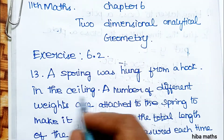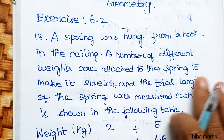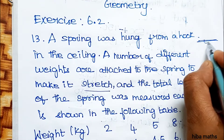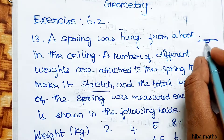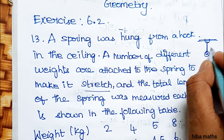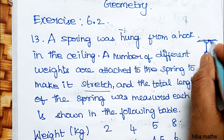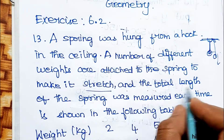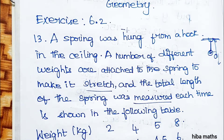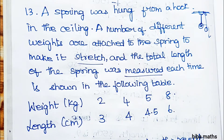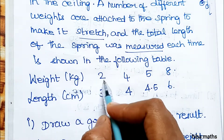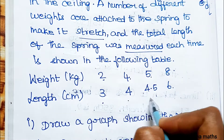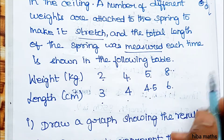A spring was hung from a hook in the ceiling. A number of different weights are attached to the spring to make it stretch. The length of the spring was measured each time. The weight is 2kg: 3cm, 4kg: 4cm, 5kg: 4.5cm, 8kg: 6cm. This is the question.